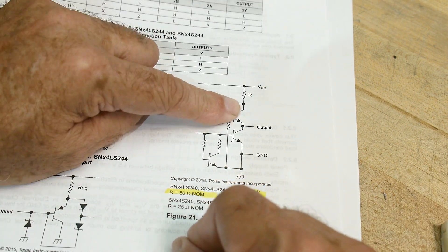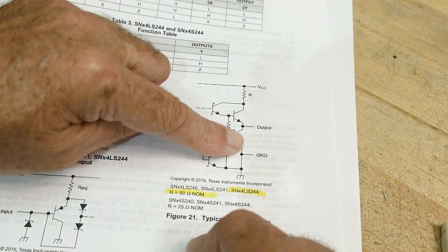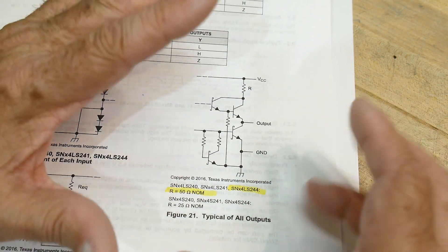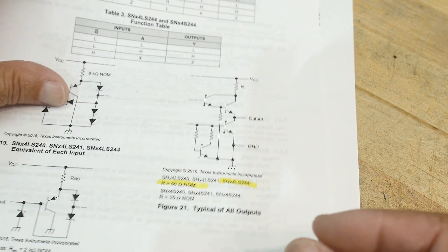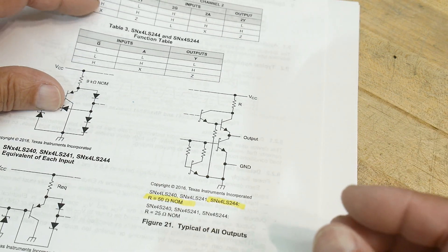One state is turn off this transistor and turn off this transistor, and so the output just floats. It just doesn't do anything at all, and that's the tri-state.